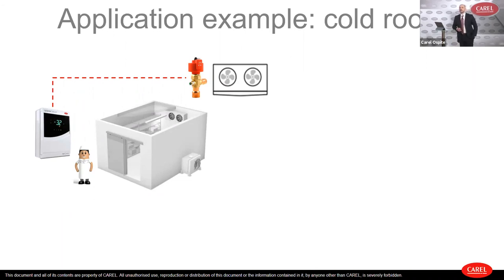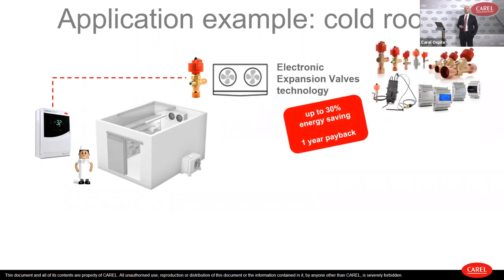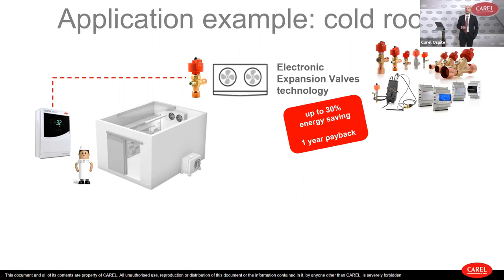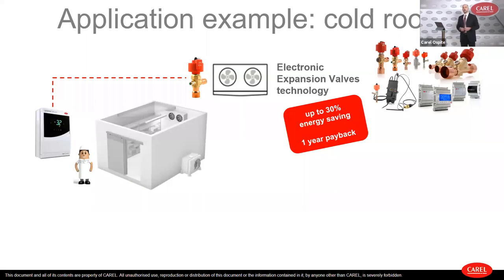Going to the application — we speak about the electronic expansion valve. The AXV system by CAREL can grant up to 30% energy saving on a cold room, for example, and around one year of payback. Electronic expansion valves cost more than a thermostatic mechanical valve, but the energy saved by using this technology can be recovered in around one year, and then for the following years it's all energy and money bill saved.